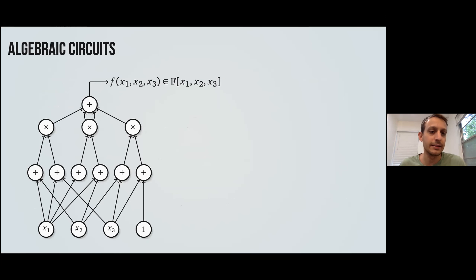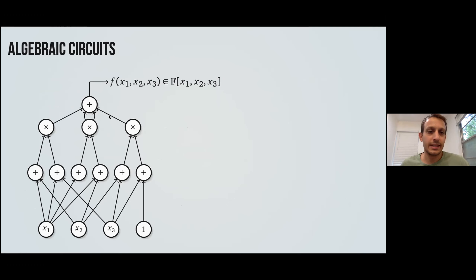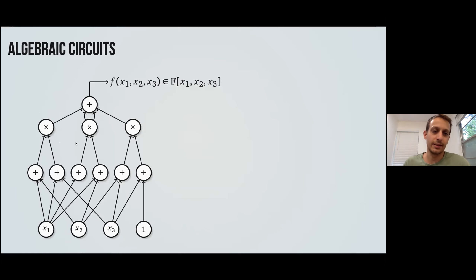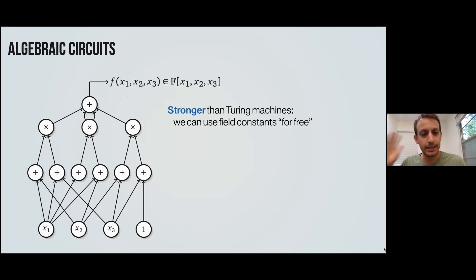The most general model of algebraic computation is called an algebraic circuit. An algebraic circuit is like a Boolean circuit, except that the operations are arithmetic operations and not Boolean operations, and it computes a polynomial or rational function. The inputs are either variables or constants from some field, and the circuit computes via addition and multiplication gates. For example, an addition gate computes x1 plus x2, and a multiplication gate multiplies whatever is computed at its inputs. It's just a graphical way to represent an algebraic computation, and at the end you get some polynomial over the field.